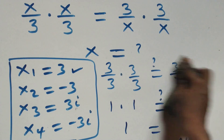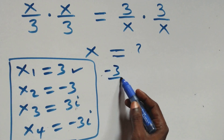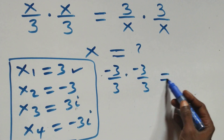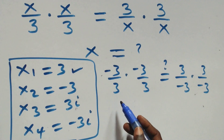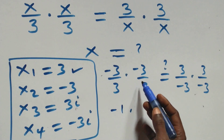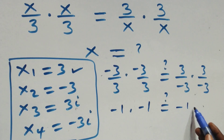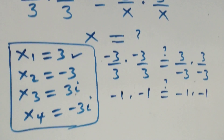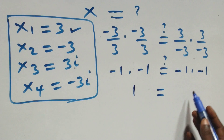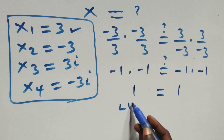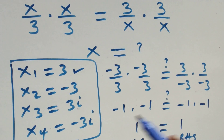Substituting x equals −3: we get (−3/3) times (−3/3) on the left, which is (−1) times (−1). On the right-hand side, (3/−3) times (3/−3) is also (−1) times (−1). Minus times minus is plus, so both sides equal 1. Left-hand side equals right-hand side, so x equals −3 also satisfies the given problem.